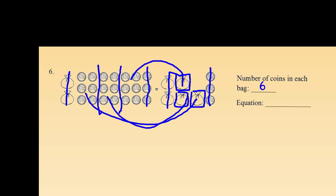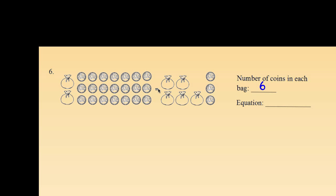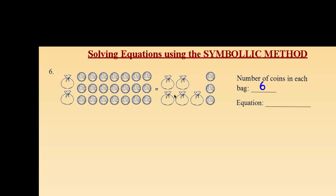Now imagine taking the same problem and solving it a different way. Instead of using the picture, let's use what we're going to call the symbolic method — using symbols to find the solution. We first have to represent the picture as a symbolic equation. Since we don't know how many coins are in each bag, we'll use a letter — lowercase b — to represent the number of coins in each bag. We don't know the value of b, but we do know each bag has the same number, so we can use the same letter throughout.